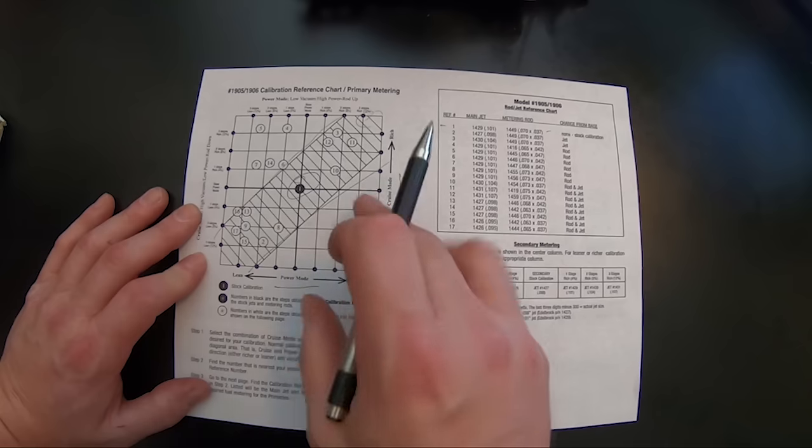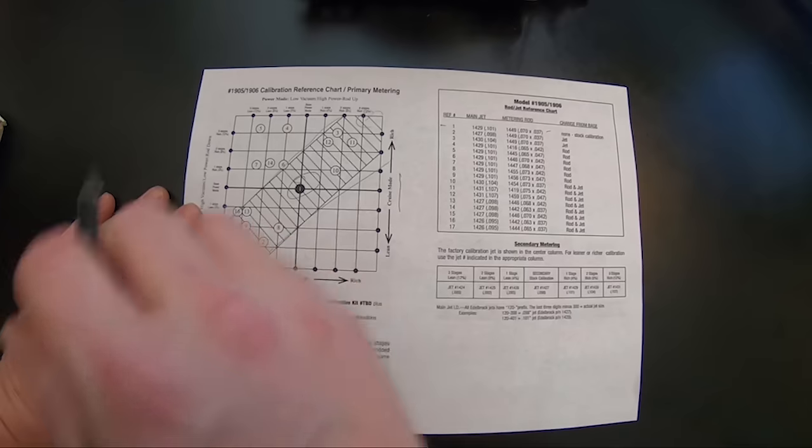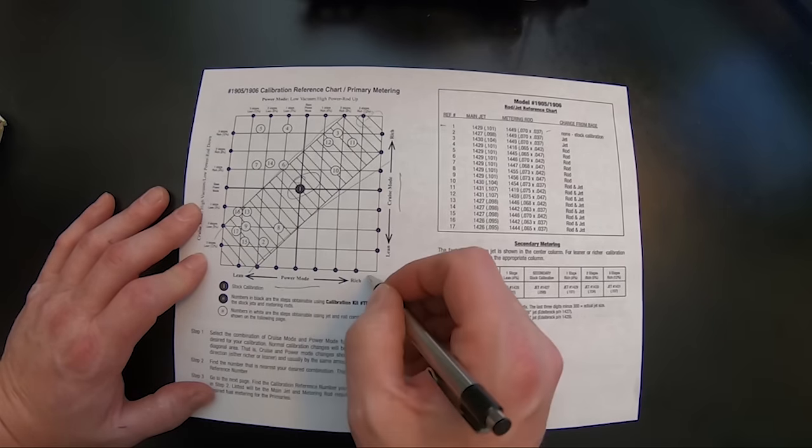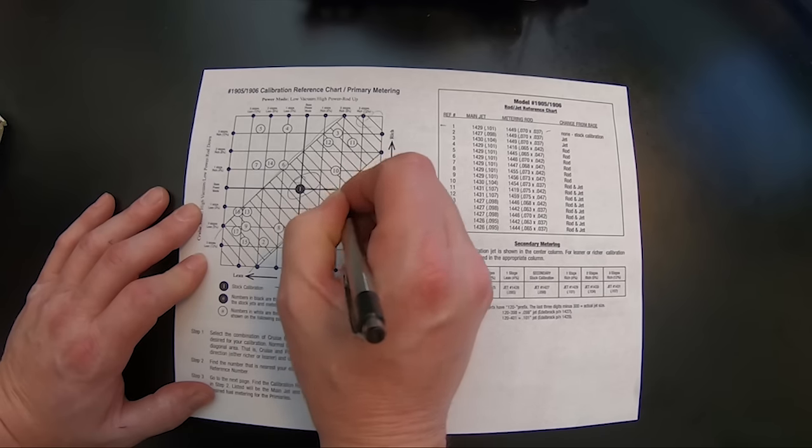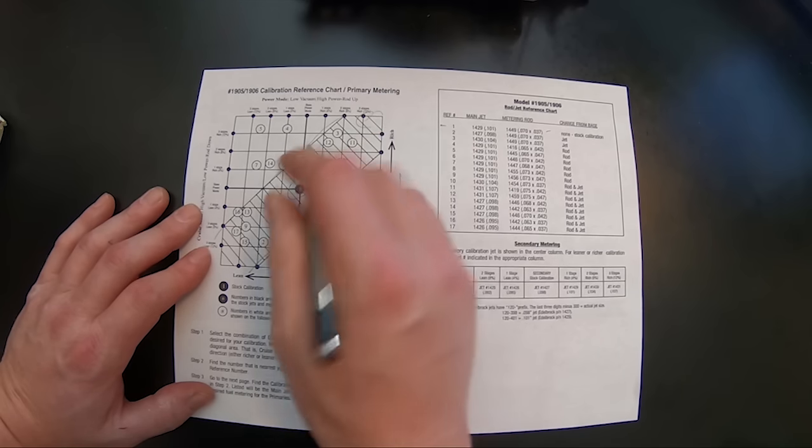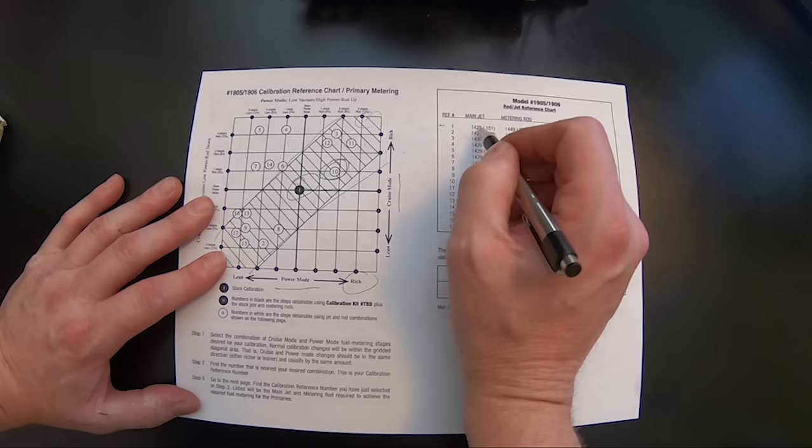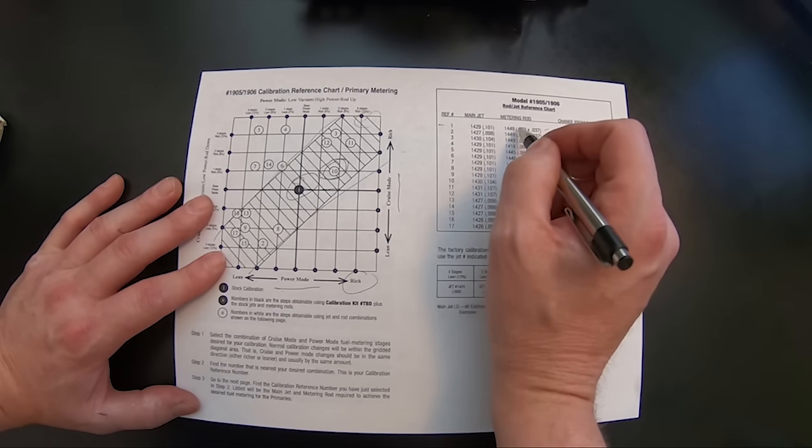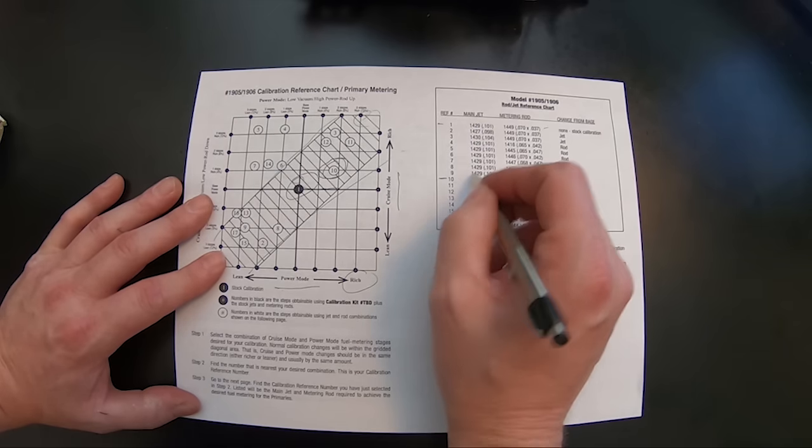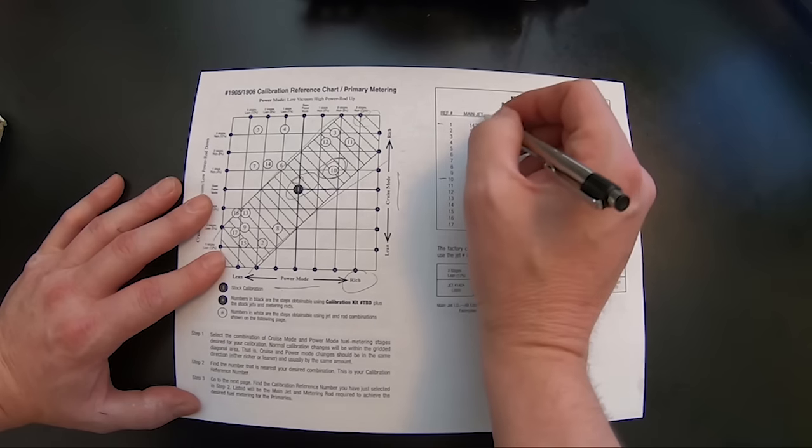So in that situation where you're at partial throttle and you hammer the gas a little bit and it kind of stumbles a little bit, then it picks up and takes off. Take a little bit more here in the power mode. We want to richen it up. So we want to take this next step rich and that next closest adjustment is here at number 10. So what you do here is you go to one, you know, you're using a 1429 on the jet and a 1449 on the metering rod.